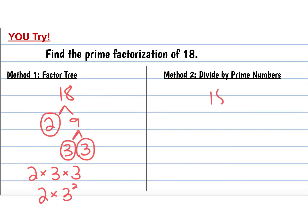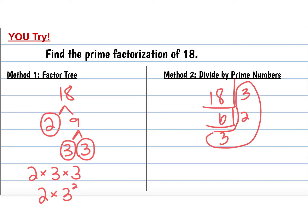Now, dividing by prime numbers — I'm going to start with 3 on this one, because 18 can be divided by 3, which is a prime number. 18 divided by 3 is 6, so I write that down below. That's a composite number, so I can keep dividing. 6 can be divided by 2, which is a prime number. 6 divided by 2 is 3. That's a prime number, so I stop, and the numbers on the side and bottom are my answer. Write them in order from least to greatest, and we end up with the same answer: 2 times 3 times 3, or 2 times 3 squared.